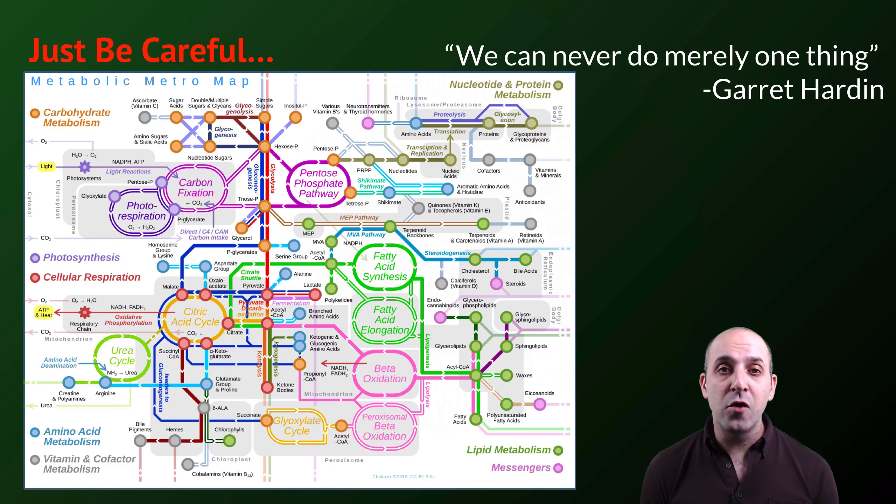But it's important before we end to understand that this complexity comes with a price, and it's maybe put best by Garrett Hardin, who stated his Hardin's Law as, we can never do merely one thing in the biological system. Any change that we make to any component in a biological system will have effects that cascade outward from the point of that change. It's never going to be as simple as increasing A leads to a decrease in B.